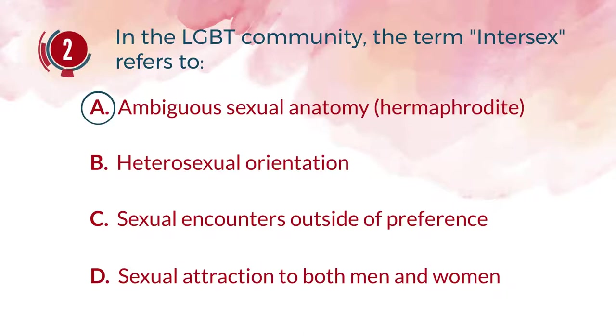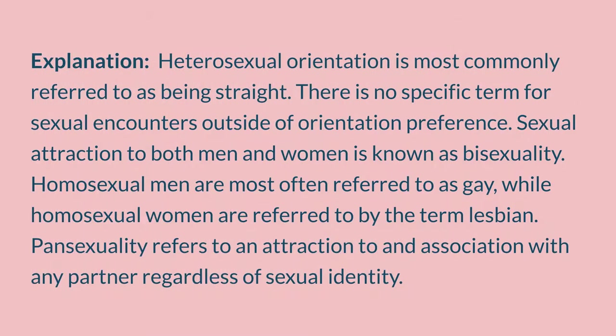The answer is A. Ambiguous sexual anatomy, hermaphrodite. Explanation: Heterosexual orientation is most commonly referred to as being straight. There is no specific term for sexual encounters outside of orientation preference. Sexual attraction to both men and women is known as bisexuality. Pansexuality refers to an attraction to and association with any partner, regardless of sexual identity.